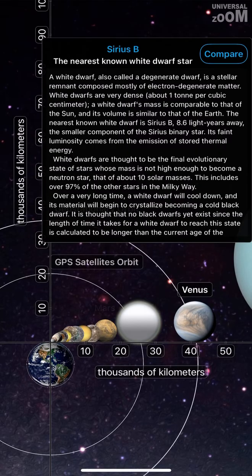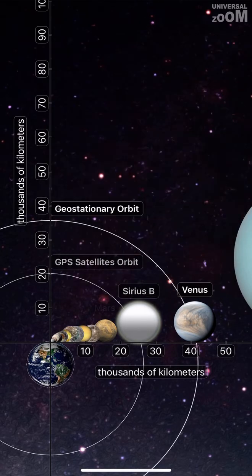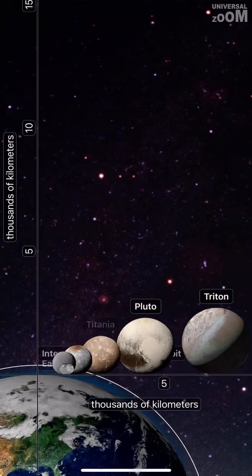Sirius B, the nearest known white dwarf star. Venus. Earth.